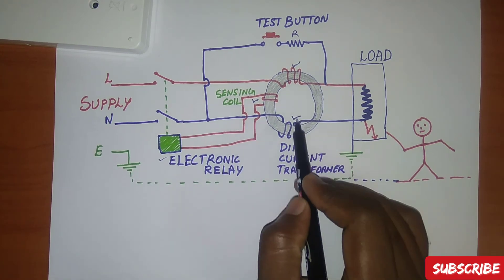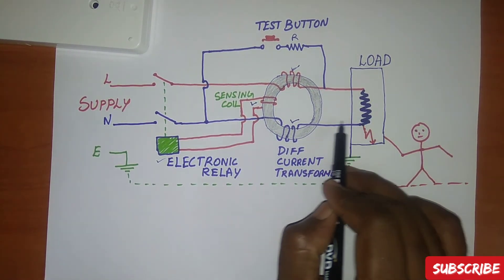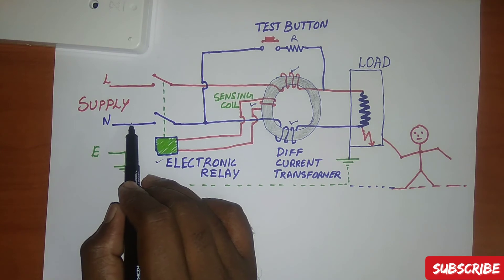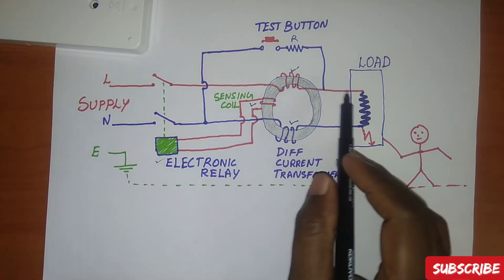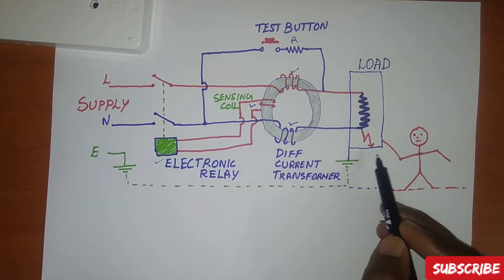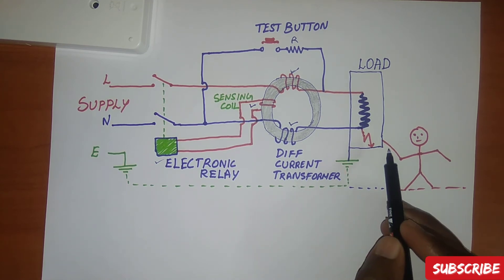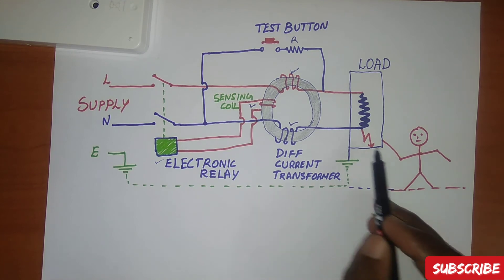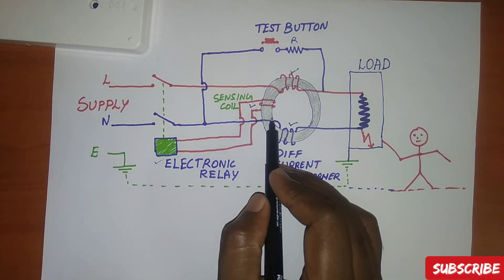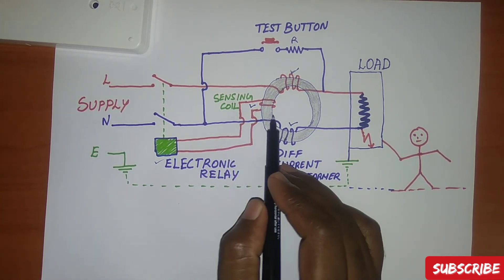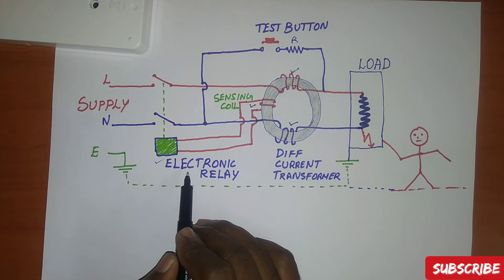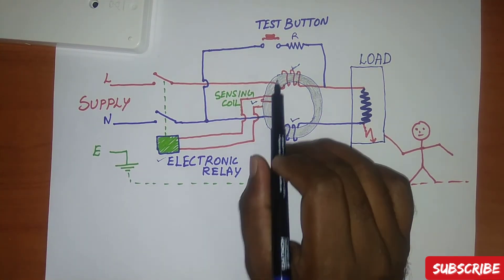The line and neutral cables are wound around the differential current transformer and directly connected to the load. In normal operation, all the current down the live conductor returns through the neutral conductor, so there is no difference detected in the current transformer. If any fault to earth occurs, or if a person touches a live component, some current takes a different path. This difference causes a current in the sense coil — the changing magnetic field induces current in it — which activates the electronic relay, disconnecting the circuit.